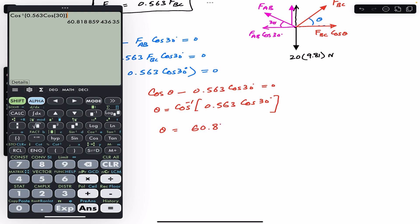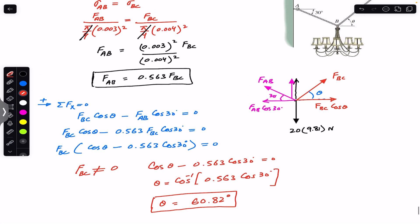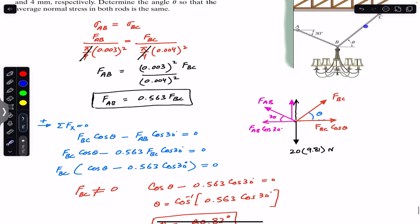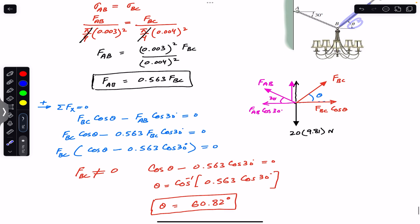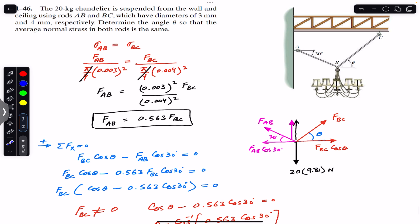Taking the inverse cosine: theta equals cos⁻¹(0.563 · cos(30°)), which gives theta equals 60.82 degrees. So if you want the stress in both rods to be equal, theta must be 60.82°. I hope this helps in your learning — do subscribe to Engineers Academy for more solutions from Mechanics of Materials by R.C. Hibbeler.